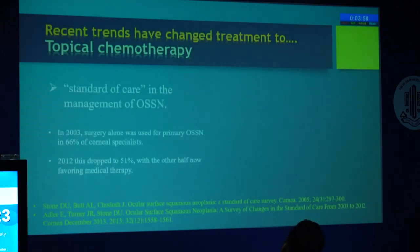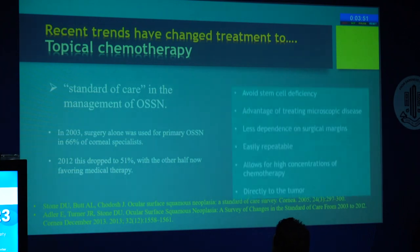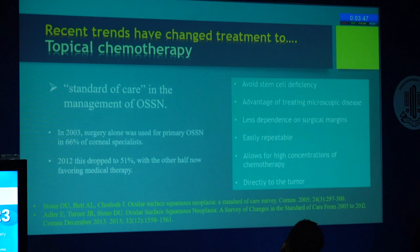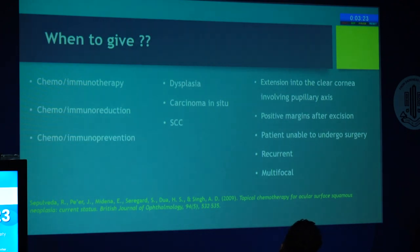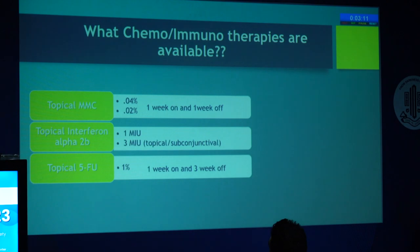There is a shift towards non-interventional treatment like topical therapies because they treat larger surfaces at one time, can be repeated, allow higher concentration, act directly over the tumor, and avoid causing limbal stem cell deficiency. Topical therapies can be used as primary therapy, as chemo- or immuno-reduction, or as a preventive measure. They can be used in any type of case from dysplasia to SCC — mainly when the patient is unfit for surgery, when the tumor involves the pupillary axis, or when the tumor is recurrent or multifocal. Available topical therapies include mitomycin C, interferon alpha-2B, and 5-FU.